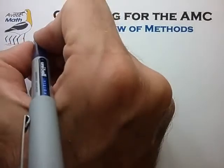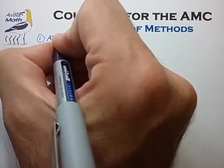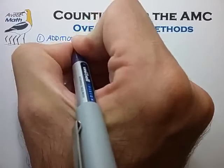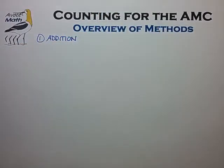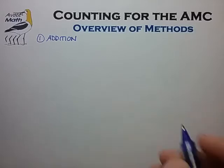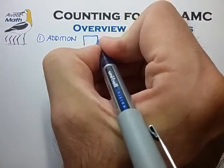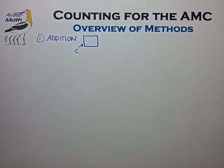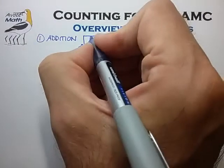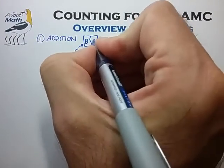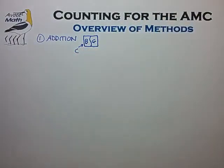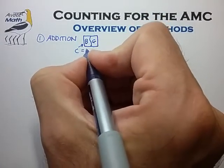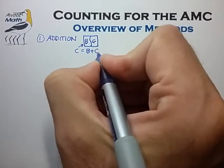The first principle is often called the addition principle. This has to do with dividing sets into subsets and counting up the pieces. The simplest example is a classroom of children. We want to count the number of children, and one strategy is to divide the classroom into two subsets of boys and girls. Count the boys and girls separately, and we quickly find that the number of children is simply boys plus girls.